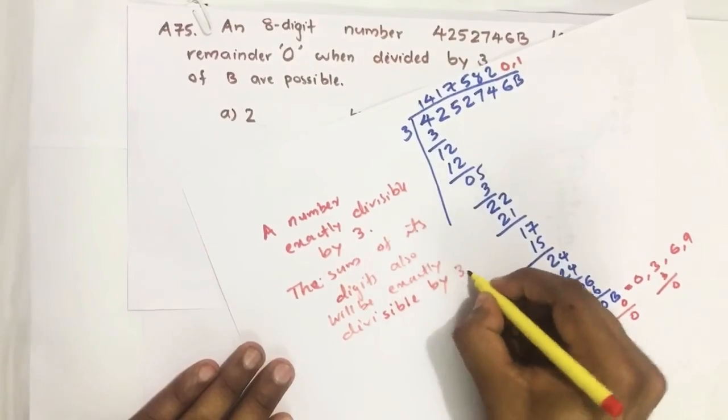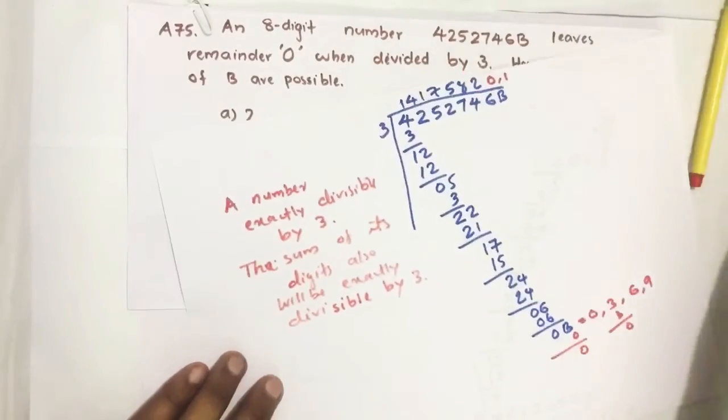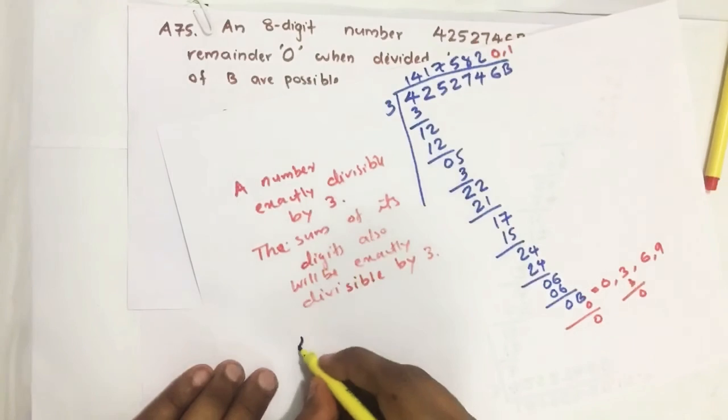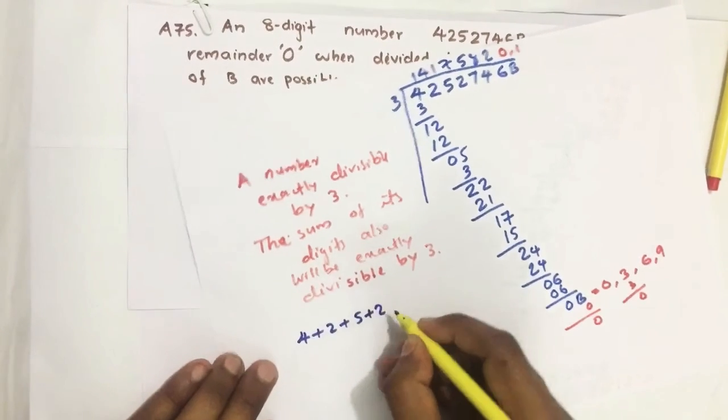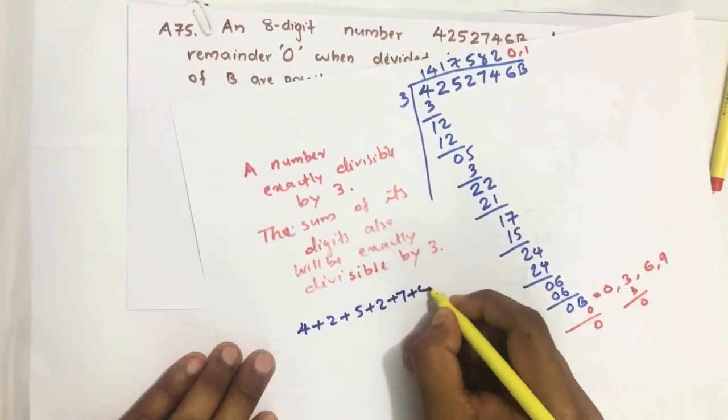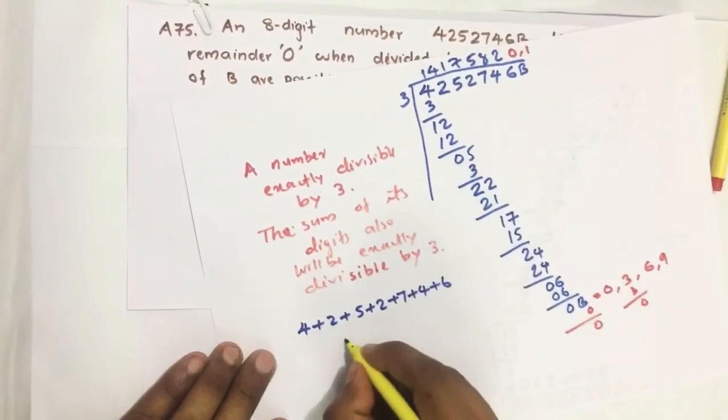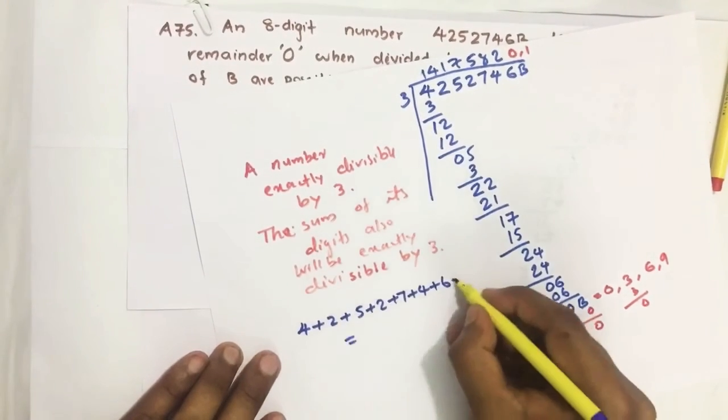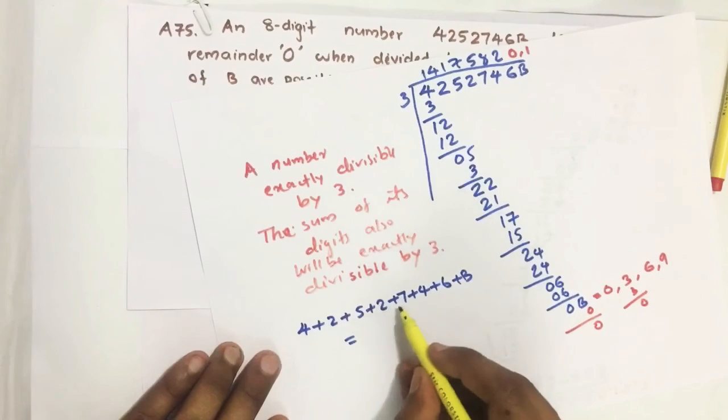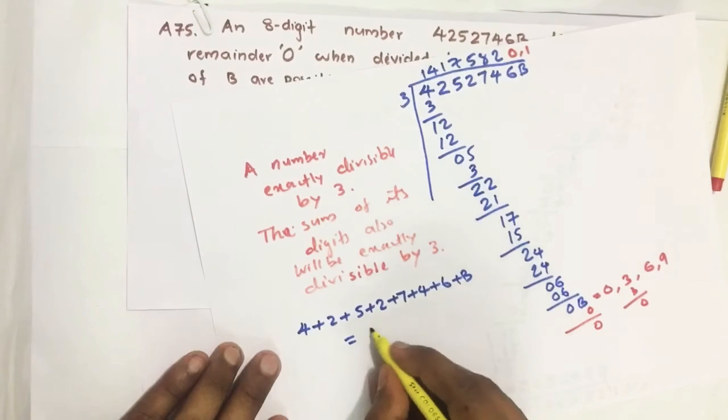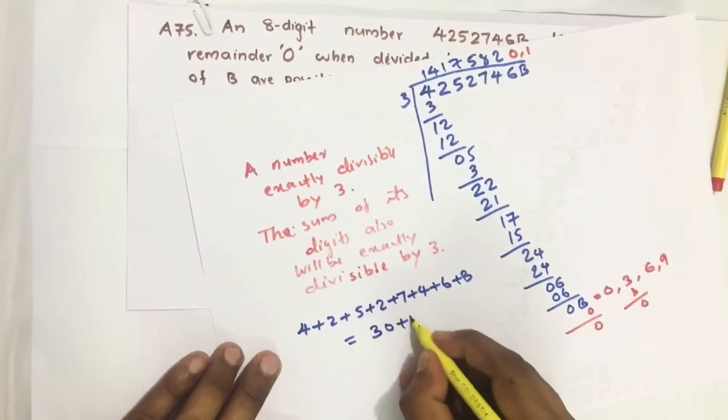Now let us add all these numbers: 4 plus 2 plus 5 plus 2 plus 7 plus 4 plus 6 plus B. We get 6, 11, 20, 30... 30 plus B.